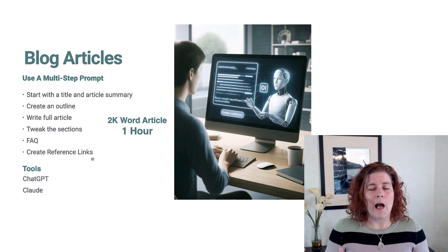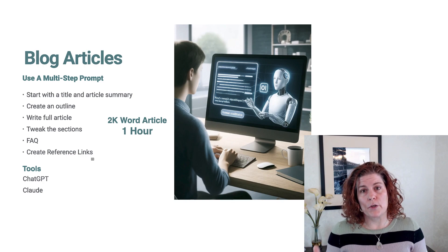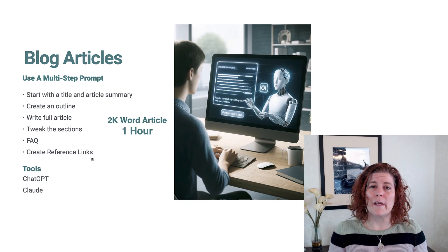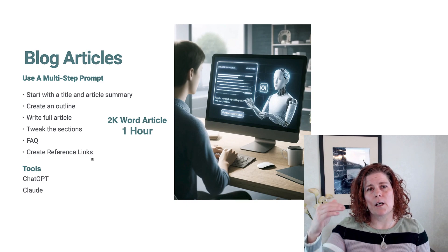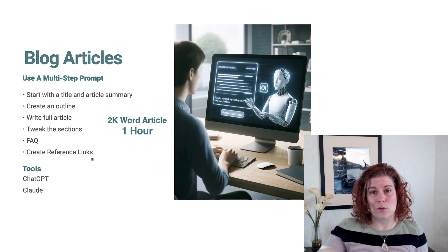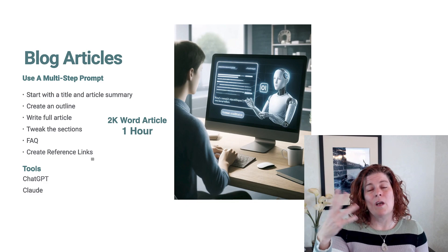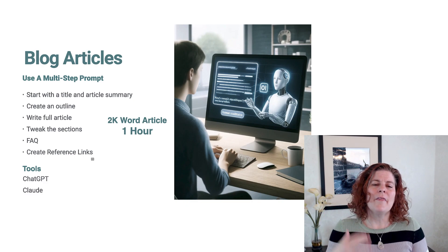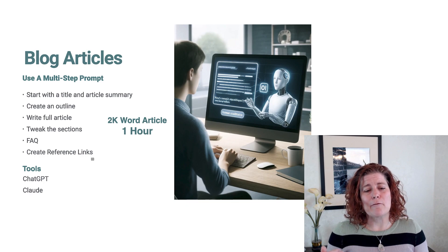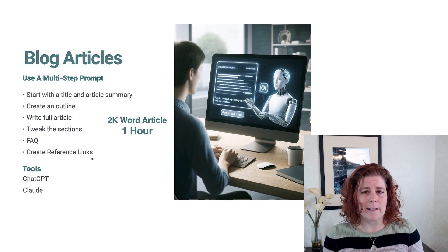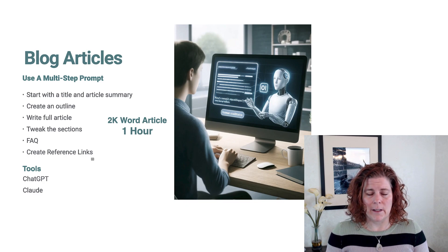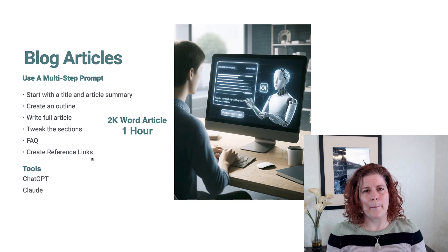Then when the article is where you want it, ask it to write a frequently asked questions section. I personally think all blog articles should have an FAQ, because that's what we use for search — we ask questions. Google has gotten smart enough to know that if there's a question answered inside an article, it'll lift it out and citation the article, giving you a better opportunity to show up in search or even higher up. The next thing you'll have to do on your own is create reference links. I've tried many ways to get AI to create an accurate list of reference links for the article, and it just doesn't do it well right now.